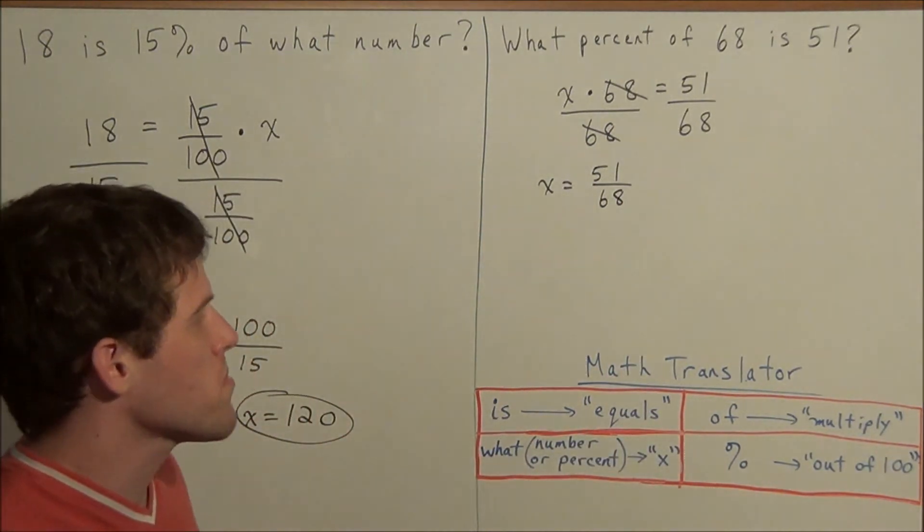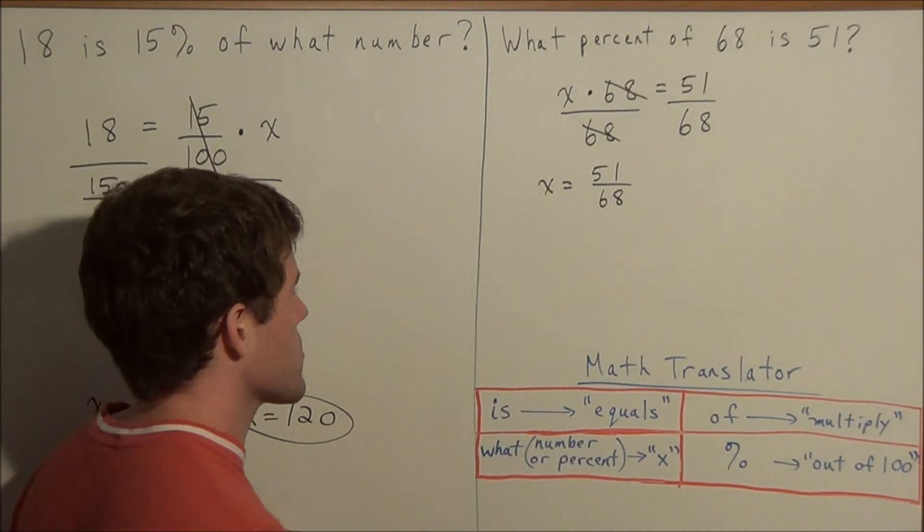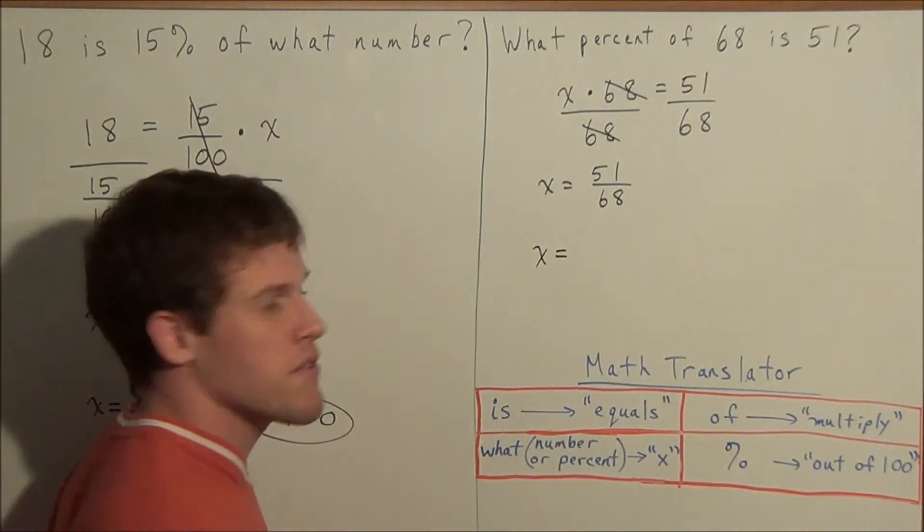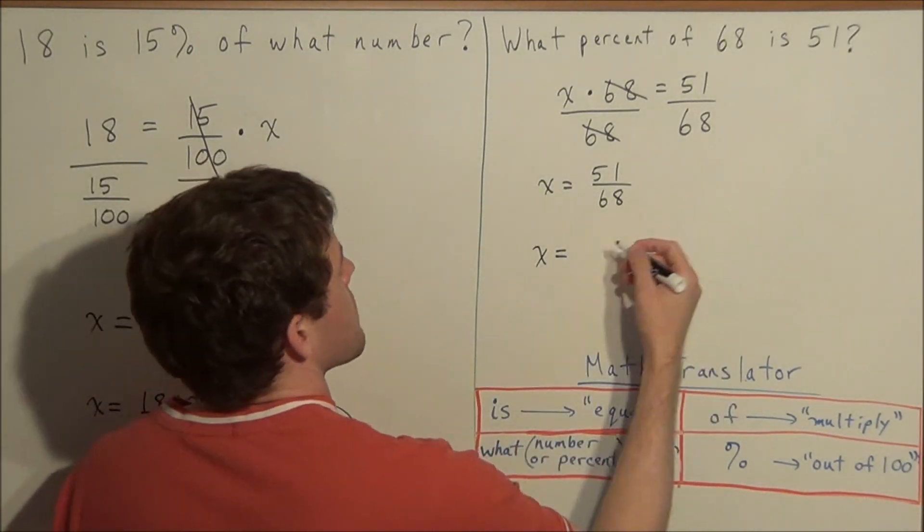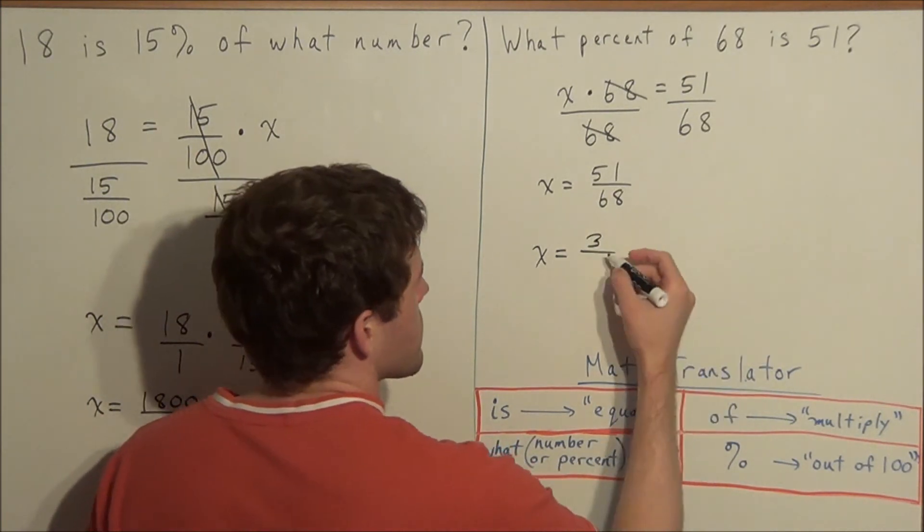But now to turn this into a percent, we could punch this into a calculator or we could reduce this fraction and it might be more obvious. Notice how 51 and 68 have a common factor of 17. So if we do 51 divided by 17, we get 3, and if we do 68 divided by 17, we get 4.